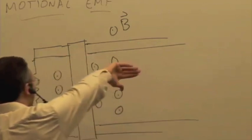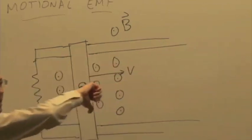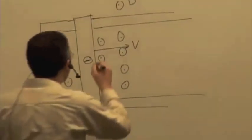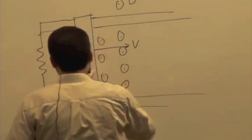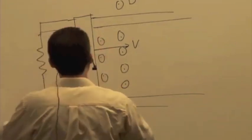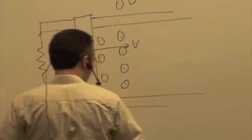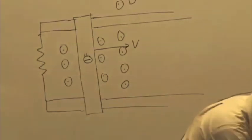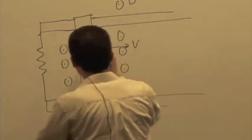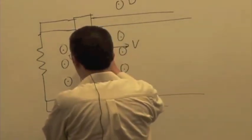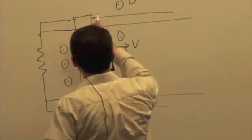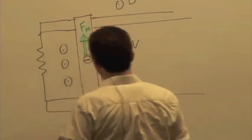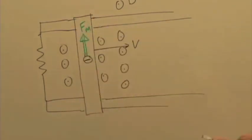Up. Force is QV cross B, right? So V cross B is down, but multiplied by negative charge, force is up. Okay. So there's a magnetic force. In fact, let's draw that in a different color. Let's make it green, maybe. Okay, magnetic force is up. So what happens to the bar?